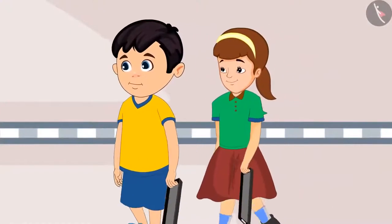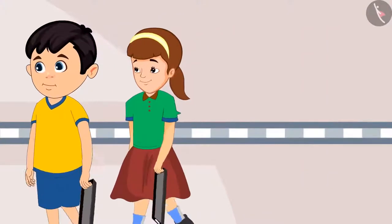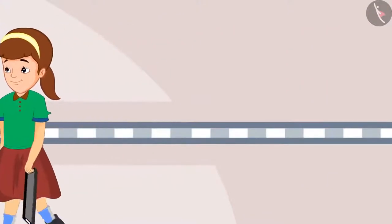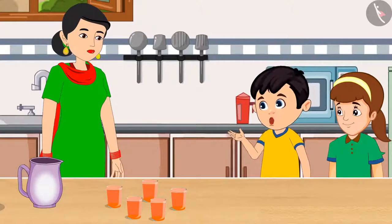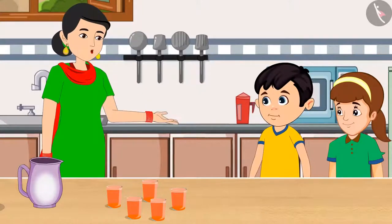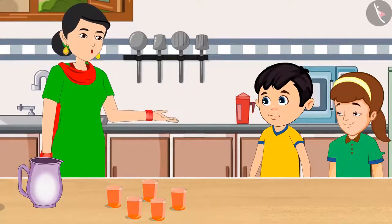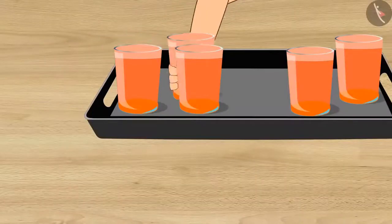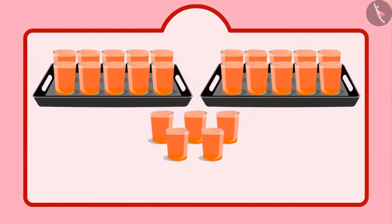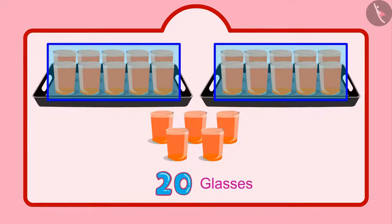Together, Chotu and our team distributed all the glasses filled with sherbet, but they needed more sherbet now. Chotu asked for more glasses, and his mother made some more sherbet. Children, can you tell me how many glasses were distributed by Chotu and Aarti together? First of all, Chotu distributed 2 groups of 10 glasses, that is 20 glasses of sherbet, and then 5 more glasses.